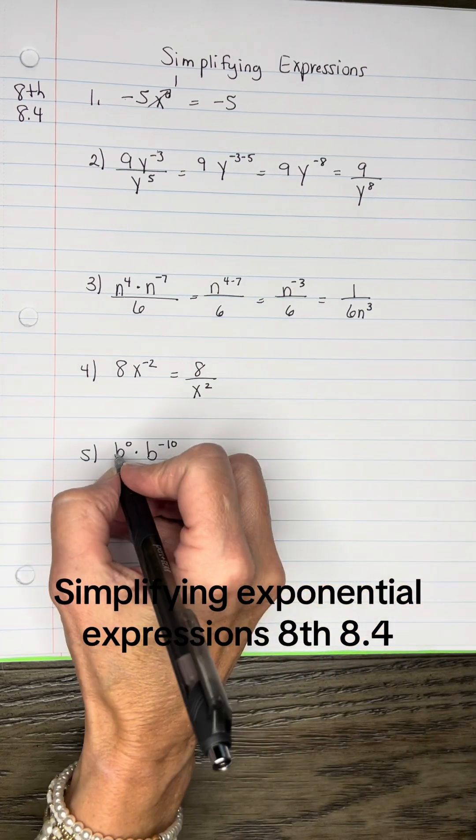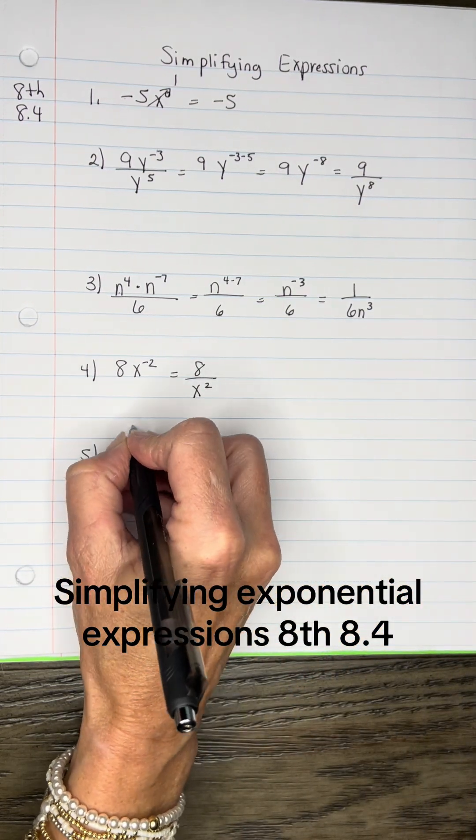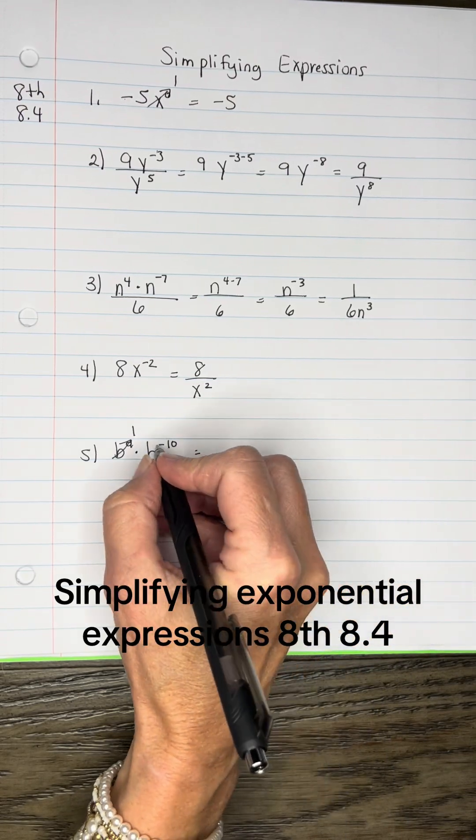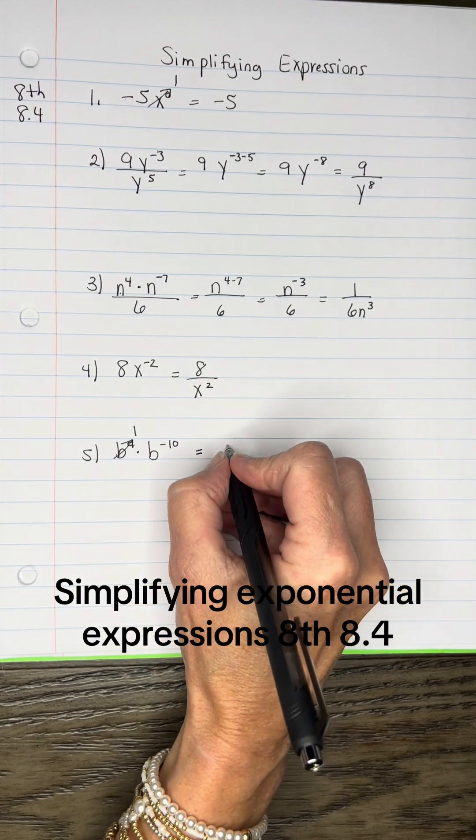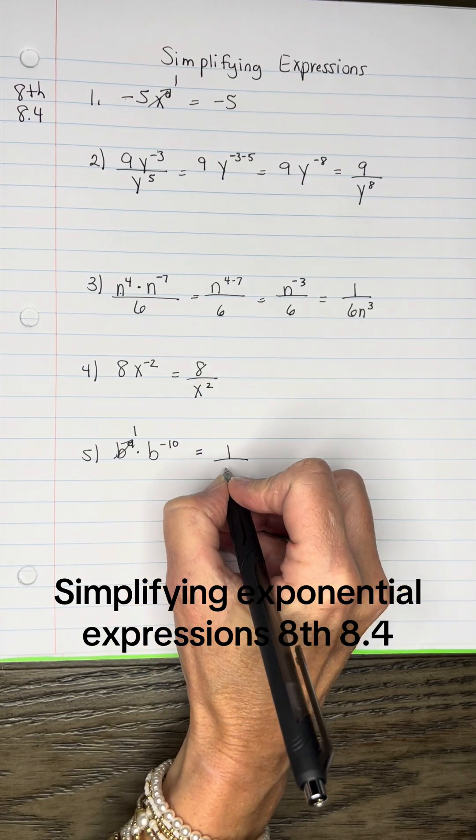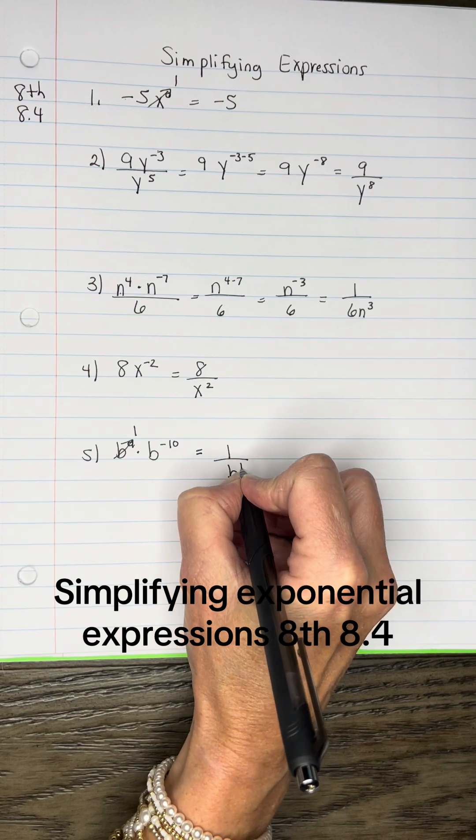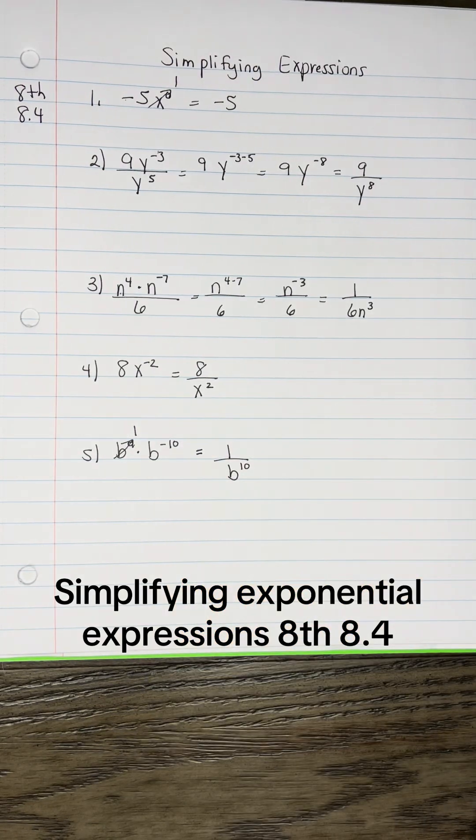And then let's see here, the B to the 0 becomes a 1, so I'm left with B to the negative 10. I need that negative 10 to become a positive 10, so I'll put a 1 over B, and then the 10 becomes positive.